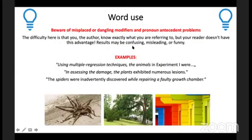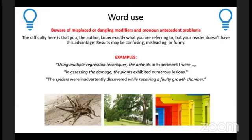Here are examples of misplaced or dangling modifiers and pronoun antecedent problems. The difficulty is that you know exactly what you're referring to, but your readers don't. Always keep your readers in mind — they are the most important people in academic publishing. For example: 'The spiders were inadvertently discovered while repairing a faulty growth chamber' — this implies the spiders were repairing the chamber. The authors knew what they meant, but it's not clear to the reader.